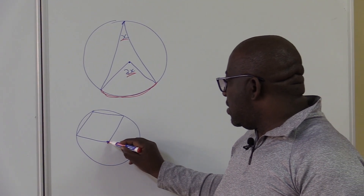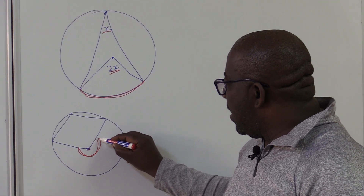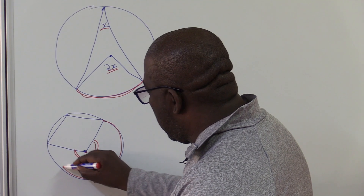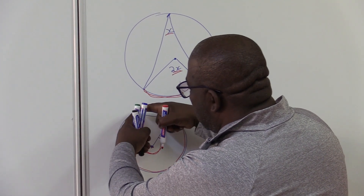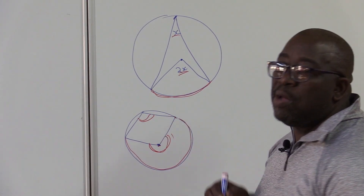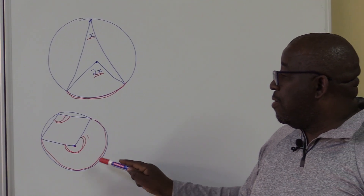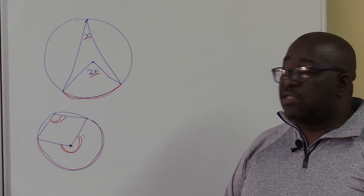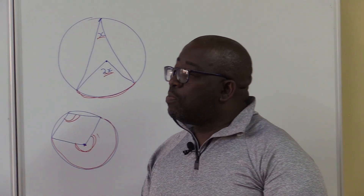Even if we have a center here and we're talking about this angle here, remember this is the arc. This arc goes to the center and the same arc goes to the circumference. So this angle here is two times bigger than that one. You must be able to notice the center theorem even if it comes in this particular way — the one at the center is twice the angle at the circumference.